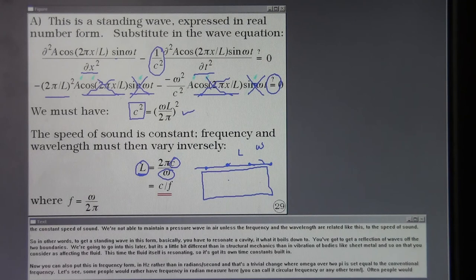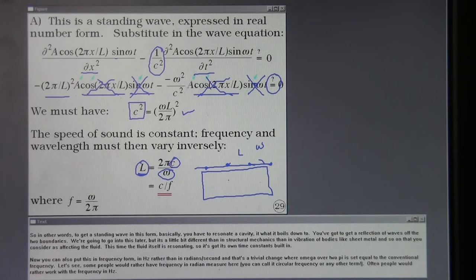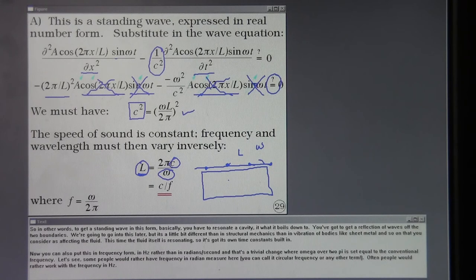Now, you can also put this in frequency form in hertz rather than radians per second. And that's a trivial change where omega over 2 pi is set equal to the conventional frequency. Some people would rather have frequency and radian measure here. So you can call it circular frequency or any other term, but often people would rather work with the frequency in hertz.